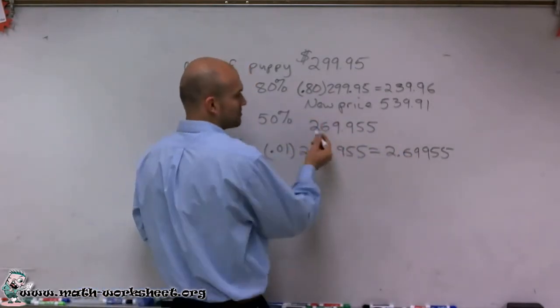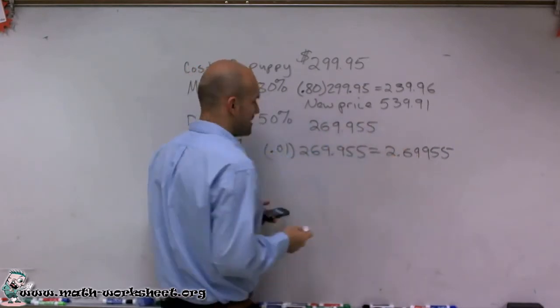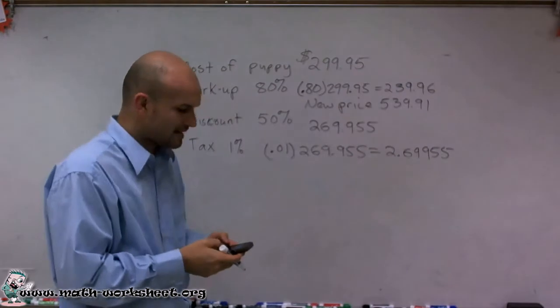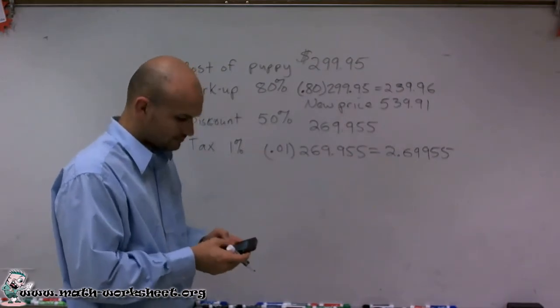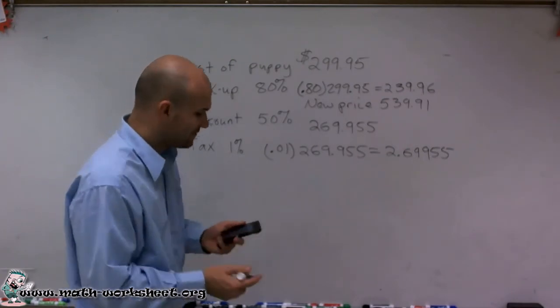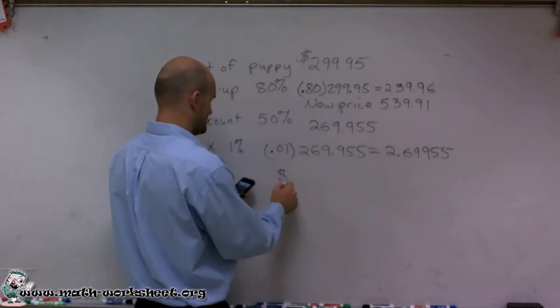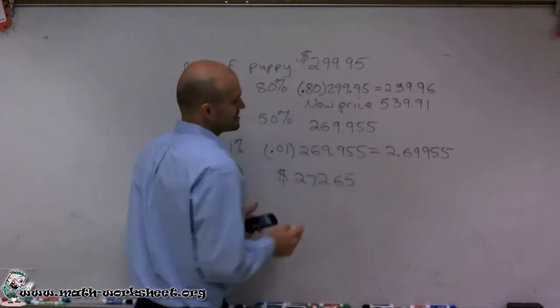So what I'm going to do is, here's my purchase price. So I purchased the puppy for this amount and then I have to make sure I pay my tax. So I'm going to add the tax to my original purchase price, 269.955, and therefore I get a final cost of $272.65 for the puppy.